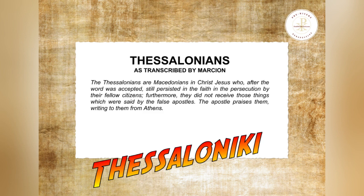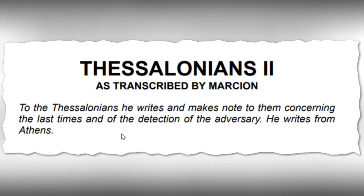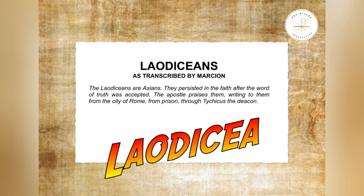Now 2nd Thessalonians: 'To the Thessalonians, he writes and makes note to them concerning the last times and of the detection of the adversary. He writes to them from Athens.' Moving on to Laodiceans — which you know as Ephesians. Quote: 'The Laodiceans are Asians. They persisted in the faith after the word of truth was accepted. The apostle praises them, writing to them from the city of Rome, from prison, through Tychicus the deacon.' Unquote.